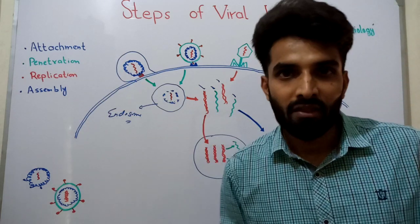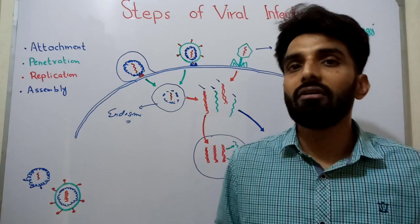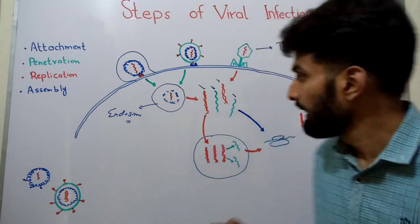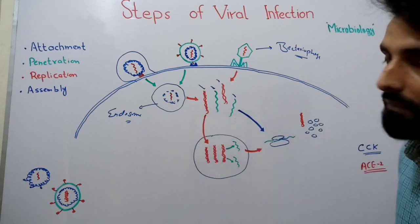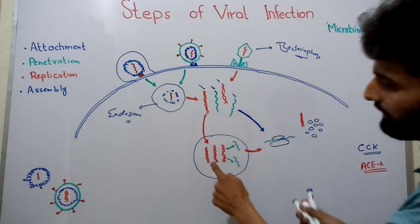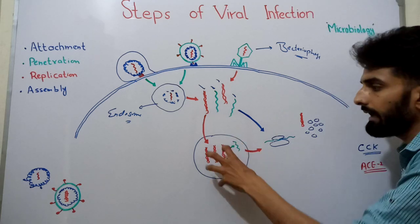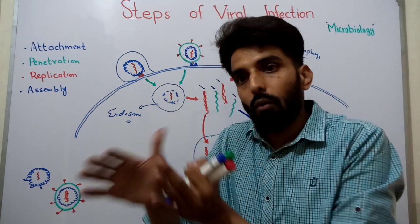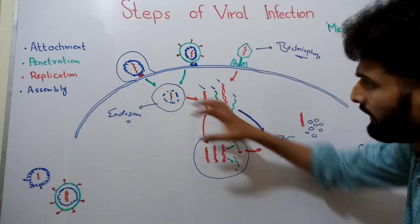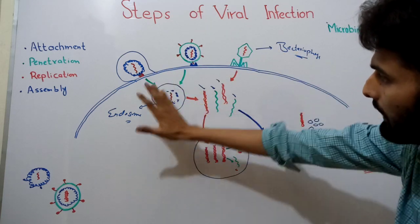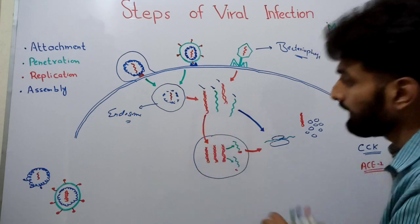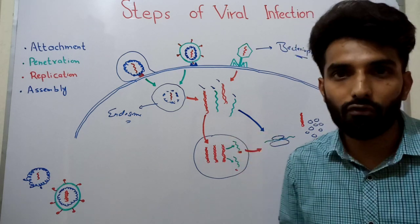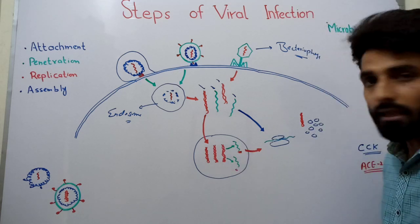Now the process of replication begins, which also depends on the type of virus. If it is a DNA virus, after releasing its DNA into the cytoplasm, most DNA viruses — with few exceptions — send their DNA into the nucleus. Inside the nucleus, copies of the DNA are made, replication occurs, and early gene and late gene transcription takes place, producing multiple copies of the viral DNA and various RNA molecules.